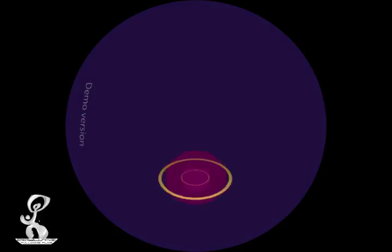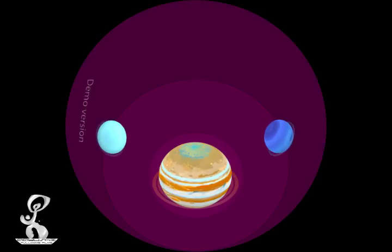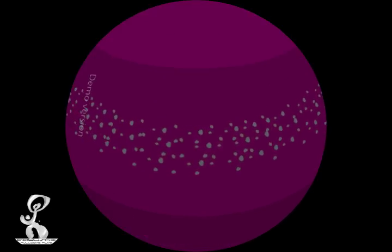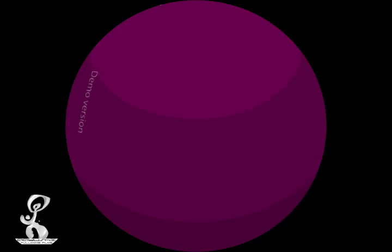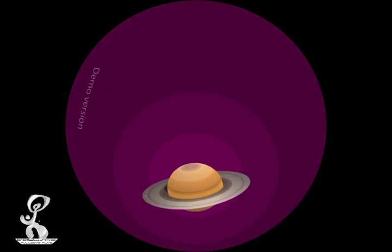Also, all gas giant planets have beautiful rings made of really tiny icy rocks. Of course, no one can beat the mind-blowing rings of Saturn.